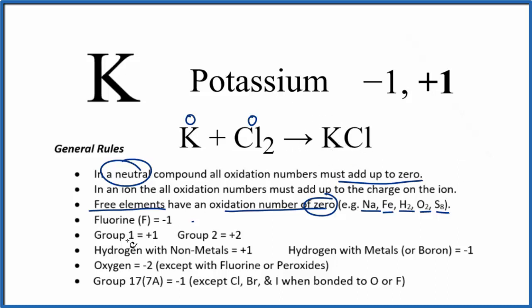Their oxidation states, oxidation numbers are going to have changed. Potassium, that's in group one, it now has a plus one oxidation number. The chlorine has a minus one. So the potassium has changed to a plus one state.